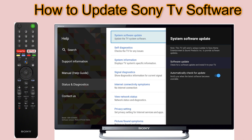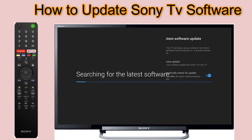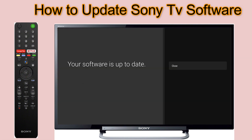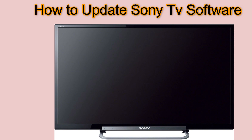Now go to the Software Update option and press OK. The TV will search online for the latest software. If it is available, automatic download will be started and installed. If not, it will give you a message that your software is up to date. That's how you can update your Sony TV software. Thanks for watching.